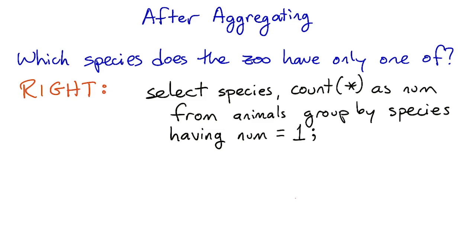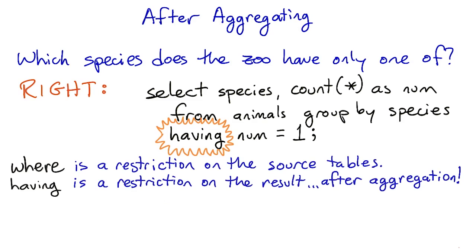Whereas WHERE filters the source table, animals, HAVING filters the result table. So HAVING applies after the group by aggregation, and we'll get the right answer.